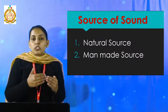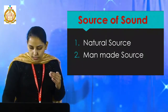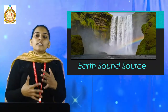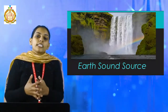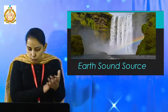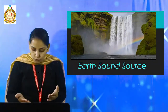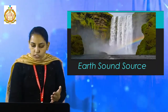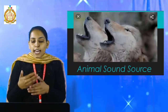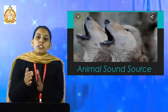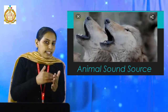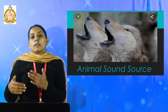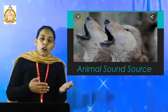Natural sources are further divided into subcategories. First one is earth sound — those sounds that are created by nature, for example sound of waterfall, sound of river, sound of ocean, etc. Next one is animal sound — the sound created by animals, for example sound produced by dogs, by frogs, and other animals.